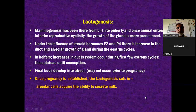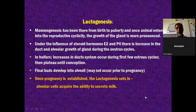Lactogenesis basically sets in when there is pregnancy. So once pregnancy is established, the lactogenesis starts and the alveolar cells, which are mammary secreting cells - the epithelial cells of the alveoli - they acquire this ability to secrete milk.